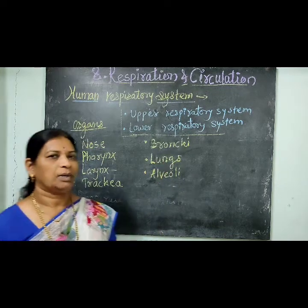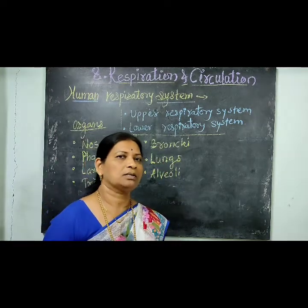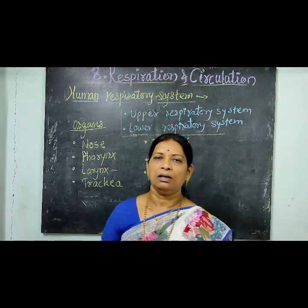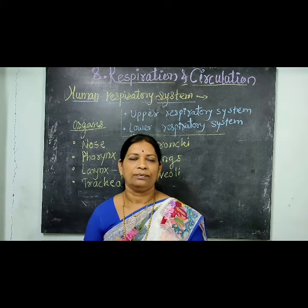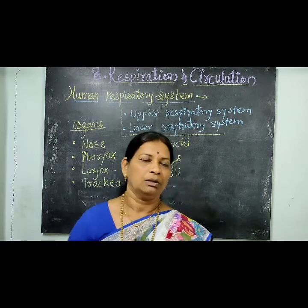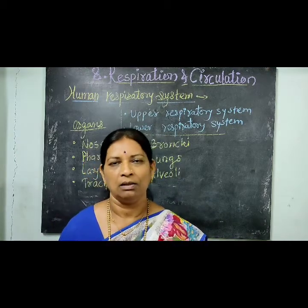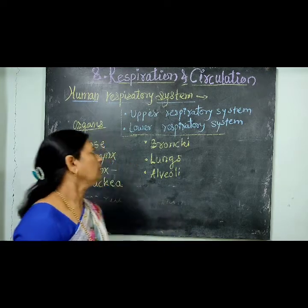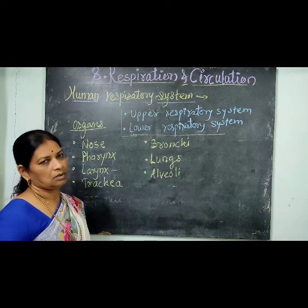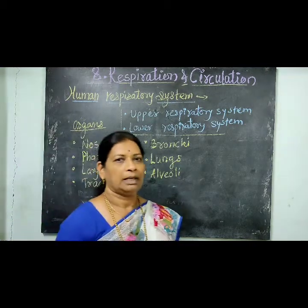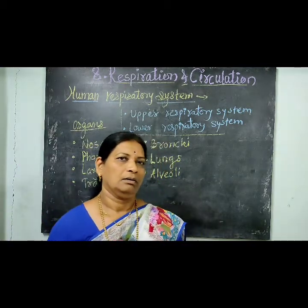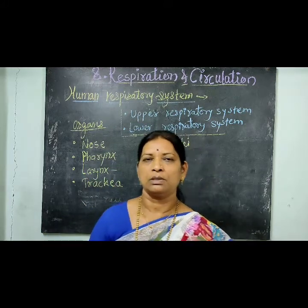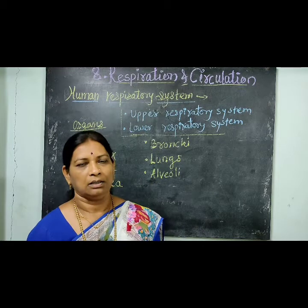The upper respiratory system consists of external nares, then nasal cavity, internal nares, then throat and associated structures. And the lower respiratory system consists of larynx, then bronchi, then bronchioles and lungs.